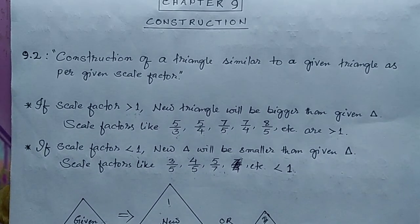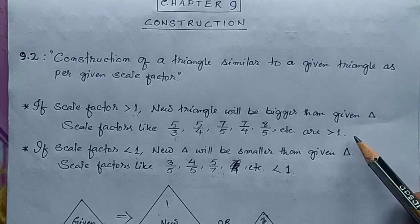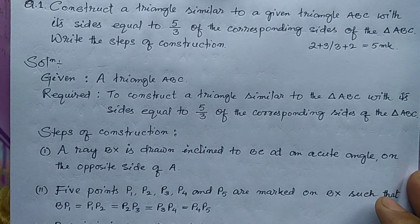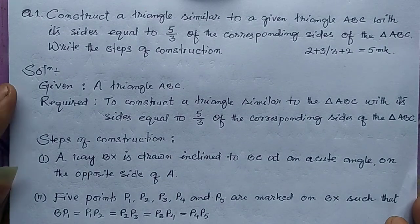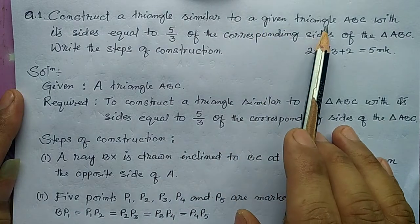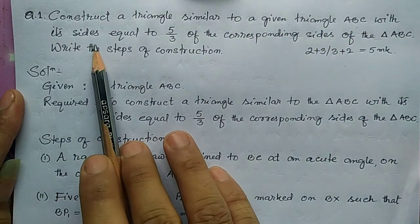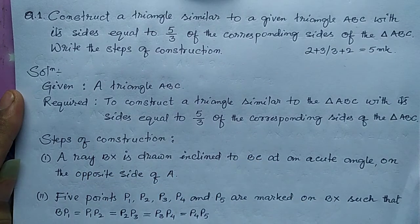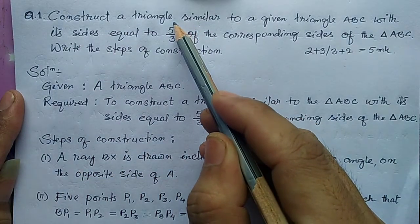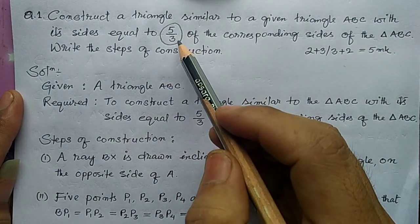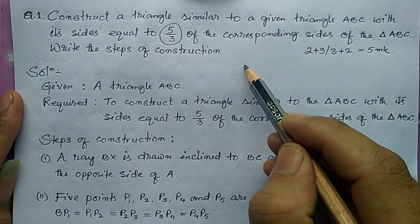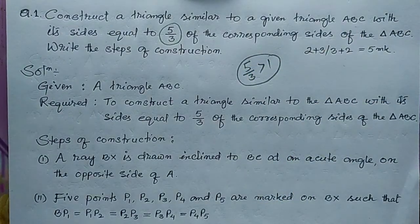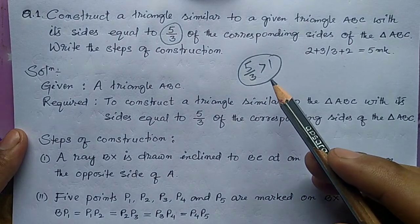Now we are going to do questions where the scale factor is greater than one, as well as less than one. The first question is: construct a triangle similar to a given triangle ABC with each side equal to 5/3 of the corresponding side of triangle ABC. The scale factor here is 5/3, which is greater than one, so our new triangle will be bigger than the given triangle.